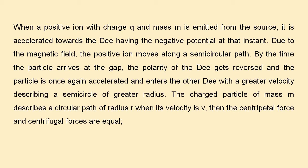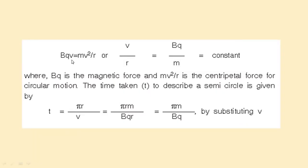The charged particle of mass M describes a circular path of radius R when its velocity is V. The magnetic force and centripetal force are equal: QBV = MV²/R. Here, QBV is the force experienced by a charged particle of charge Q moving with velocity V in a magnetic field B, and MV²/R is the centripetal force. From this, V/R = QB/M.